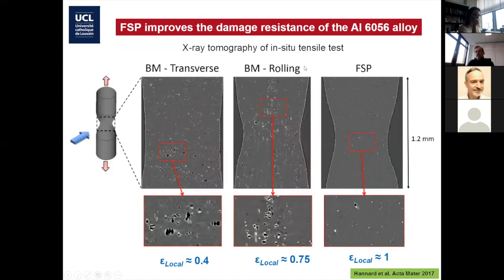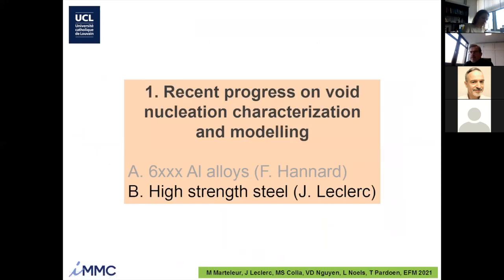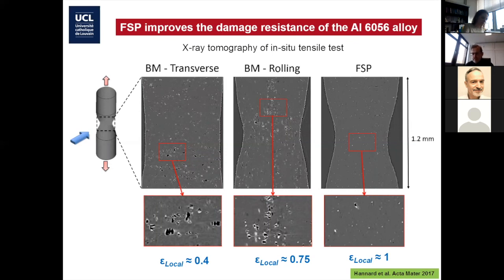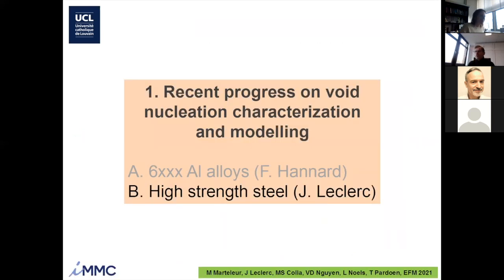You have tomography images in the transverse and rolling direction for the base material, and now for the friction stir processed material — you see much less damage, more extensive necking, etc. That was the story for the thesis of Florent. I'm already talking for almost 35 minutes. I will just cover the next subject, and probably fortunately for most of you I will not enter the complicated equations. I will cover the next step — it's much shorter and somehow more classical, but still interesting to talk about. So now: high strength steel.